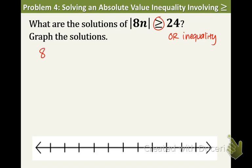Now let's rewrite this. 8n is greater than or equal to 24, or 8n is less than or equal to negative 24. Remember, we just flipped the symbol and we make that number its opposite. So if we start with positive 24, we're going to make it negative 24.